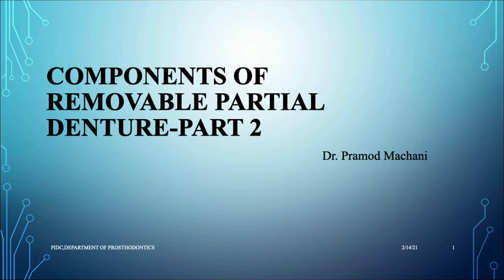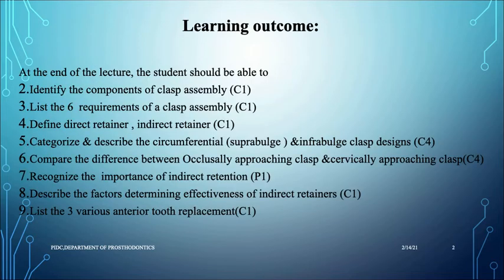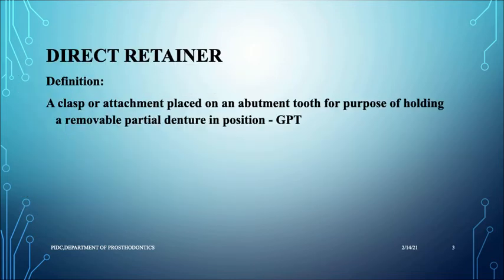Welcome to your prosthodontic lecture. We will continue with the components of the removable partial denture, Part 2. Last time we spoke about minor and major connectors and rests. This time we will speak more about direct and indirect retainers, which is basically clasps and different types of clasp.